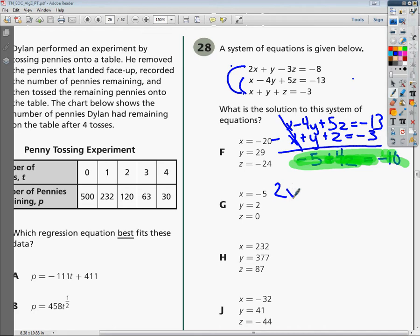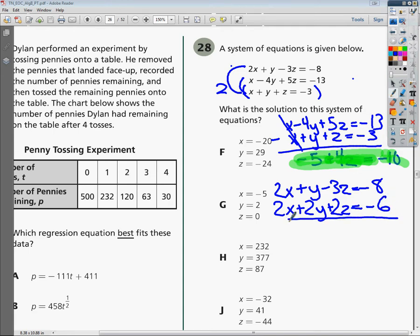So in this case, I'm going to do 2x plus y minus 3z equals negative 8. Now in order to make a comparison to eliminate x, I'm going to multiply this whole term by 2. So it'll be 2x plus 2y plus 2z equals negative 6. And all I'm doing is trying to figure out a way to get rid of the x's.